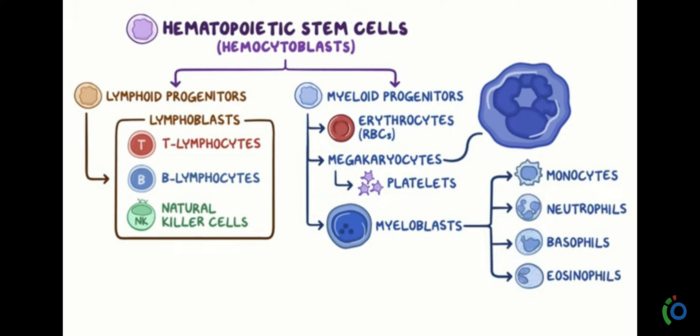Leukocytes, also called myeloblasts, are differentiated into four types: monocytes, neutrophils, basophils, and eosinophils. Monocytes are cells responsible for the phagocytic factor — they develop into WBC cells and engulf foreign particles. Neutrophils are also defensive cells. Basophils are seen in basic dyes while eosinophils are seen in acidic dyes. These cells have the presence or absence of granules.